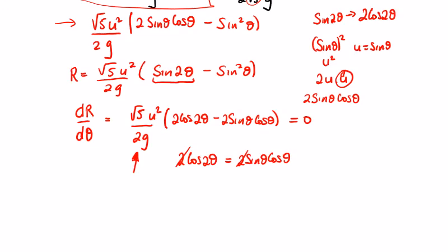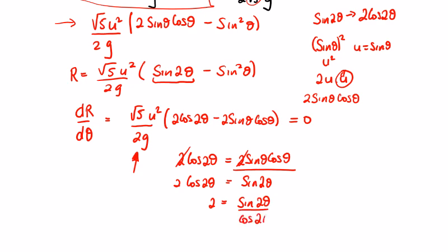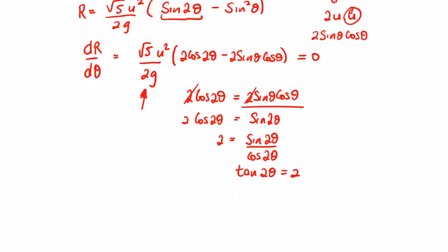Dividing both sides by cos 2θ gives tan 2θ = 2, so 2θ = inverse tan of 2 = 63.4°, and therefore θ = 31.7°. A nice question involving differentiation within projectiles — practice this one and the 2016 version, and if it comes up in your exam you'll smile to yourself broadly.